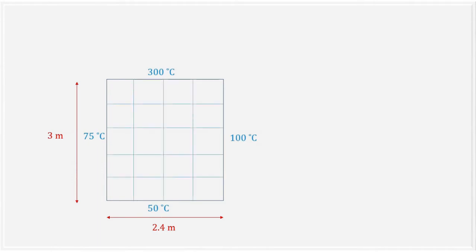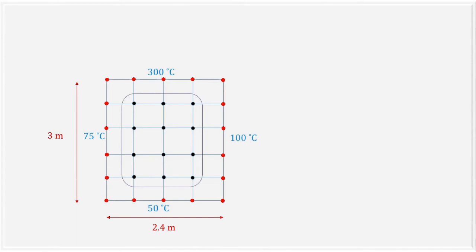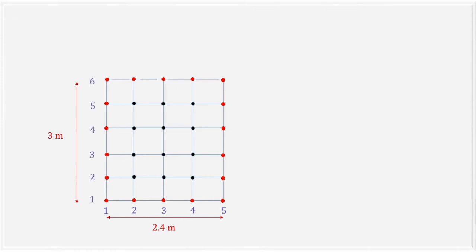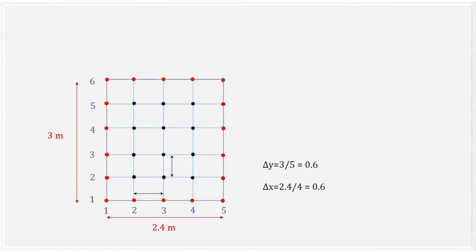We have to divide this domain into a number of grid points and then calculate the temperature of the intermediate nodes. For this example we have used 5 nodes for length L and 6 nodes for height H. Hence delta x is equal to 2.4 divided by 4, which equals 0.6. Likewise, delta y is equal to 3 divided by 5, which also equals 0.6. Hence for this problem we have a uniform grid size, that is delta x equal to delta y.